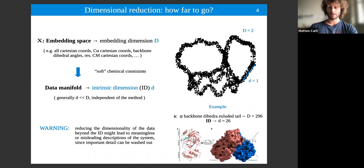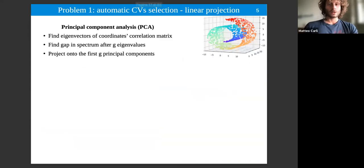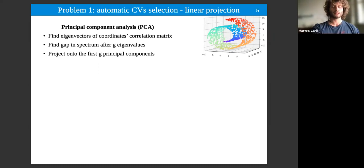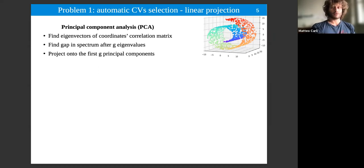For example, the main protease of SARS-CoV-2 has an intrinsic dimensionality of 26, which is very difficult to handle visually. Since it is difficult to find collective variables based on intuition, one can try to find them automatically. The simplest method is linear projection onto a hyperplane of lower dimensionality — so-called Principal Component Analysis (PCA) — which finds eigenvectors of the correlation matrix of all coordinates. If there is a gap in the eigenvalue spectrum after g eigenvalues, the intrinsic dimensionality is not greater than g.